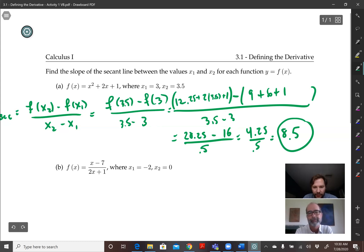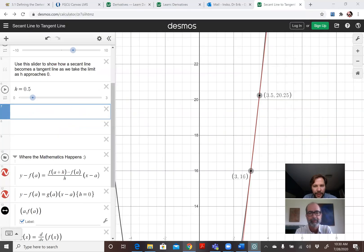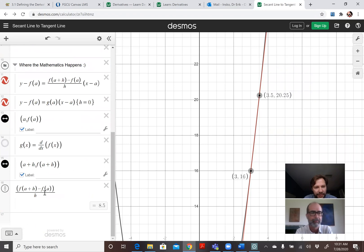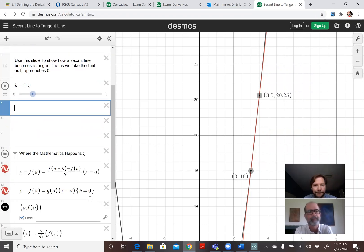Okay, so then I plotted this in Desmos so we could see what we just calculated. Here's the point (3, 16) and here's the point (3.5, 20.25), and so if we're calculating the slope of the secant line, we're calculating the slope of that red line that is going through those two points, and we calculated that was 8.5.